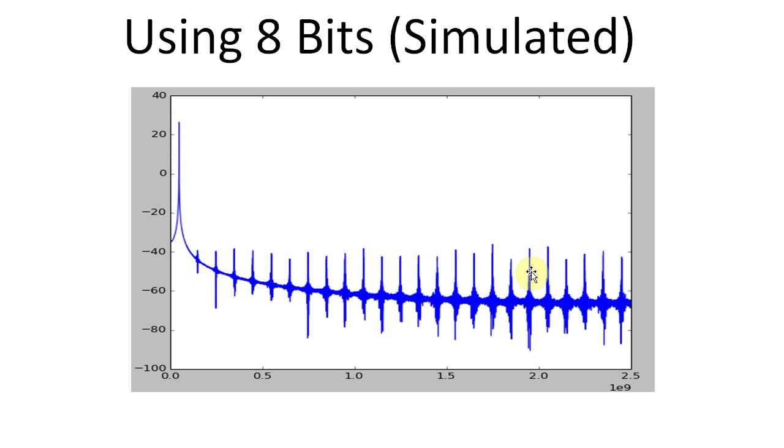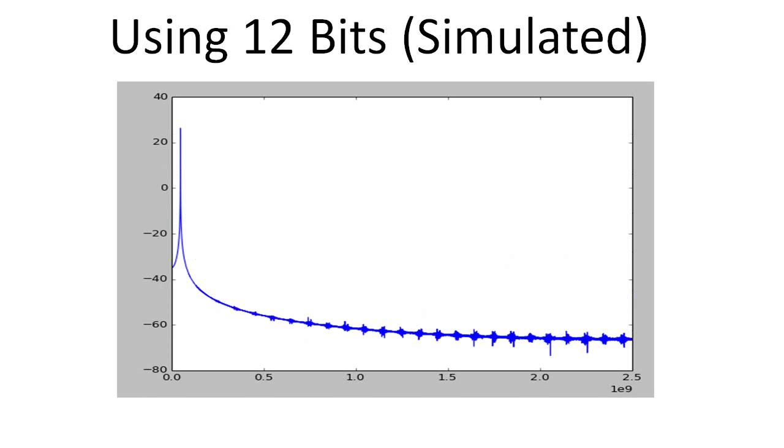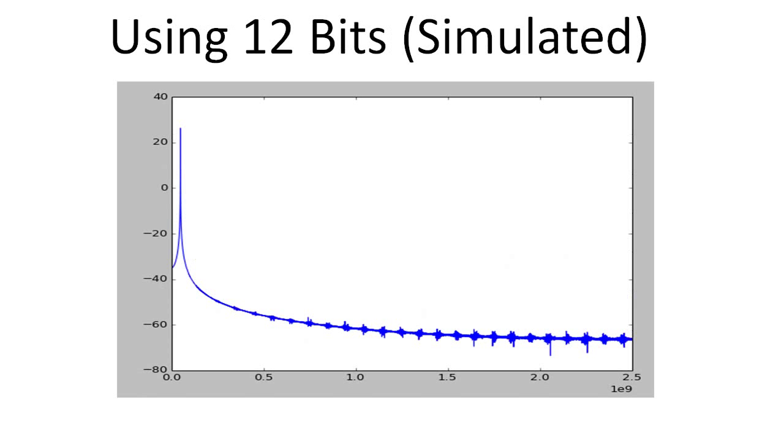We have all this other stuff, and this other stuff is due to that 8-bit quantization when it's breaking it into a step. If you go to something like 12 bits, you can see that's reduced a lot, and 16 bits, it's almost completely gone.